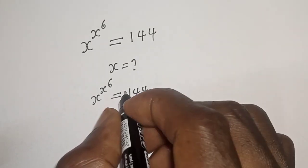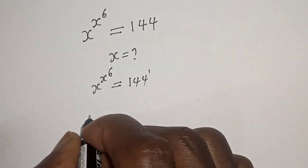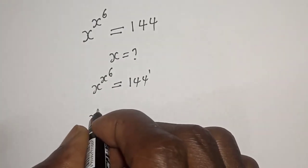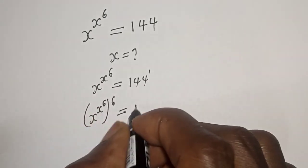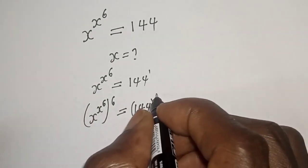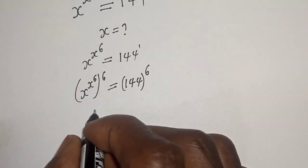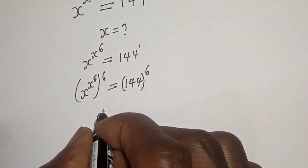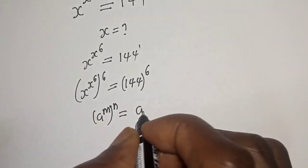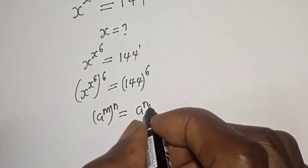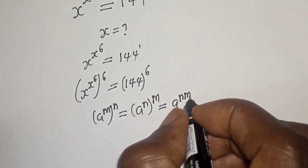This is also to the power of 1. Let's multiply the exponent of both sides by 6: s raised to power s raised to power 6 to the power of 6 is equal to 144 to the power of 6. Take note that a raised to power m to the power of n is equal to a raised to power n to the power of m, which equals a raised to power n times m.